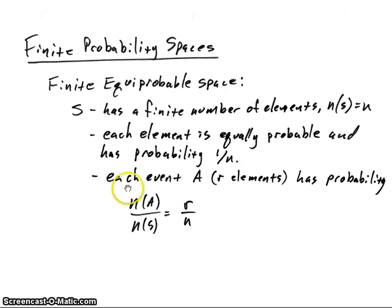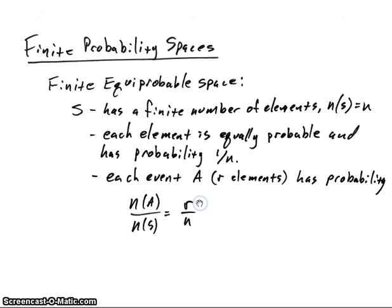But if we have an event A which has r elements in it, then the probability of that event will just be equal to n(A) over n(S), or r over n — the number of elements in the event A divided by the total number of elements in our sample space.